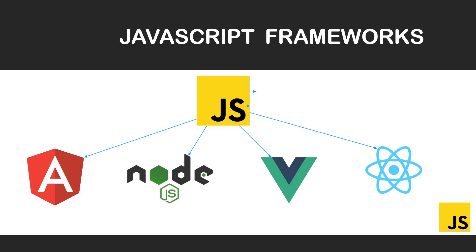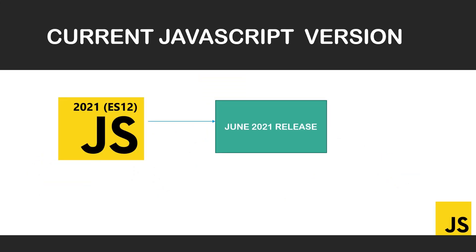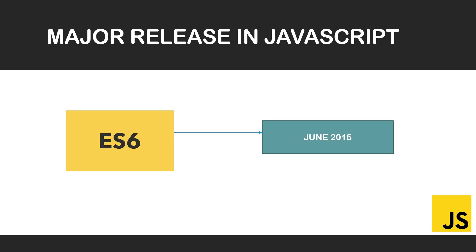The current JavaScript version is ES12, which was released in June 2021. We also have ES6, which was the second major release after JavaScript's invention and introduced a lot of features that made significant changes in JavaScript.